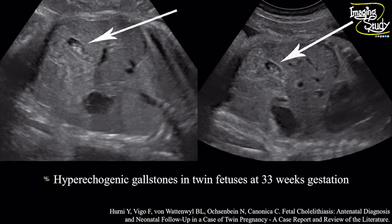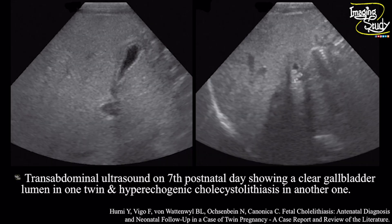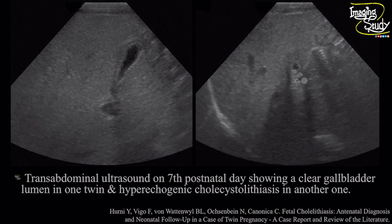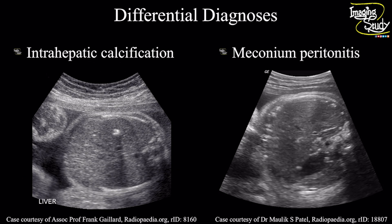Here is an interesting case from a journal. These are the pictures of twin fetuses at 33 weeks of gestation. You can see both fetuses are having hyper-echogenic stones within the gallbladder lumen. At the seven postnatal day scan, one twin shows a clear gallbladder lumen and the other shows hyper-echogenic structures casting posterior acoustic shadows within the gallbladder lumen, indicating cholelithiasis.